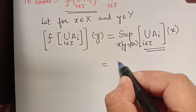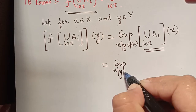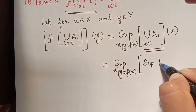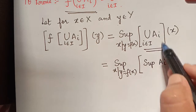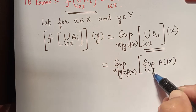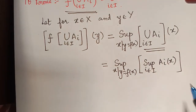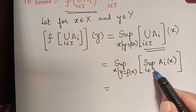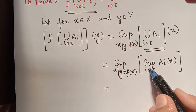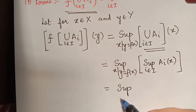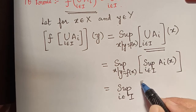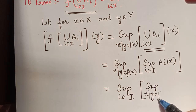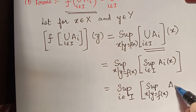This is equal to supremum over x such that y equals f of x, of supremum of Ai of x for i an element of capital I. This is by the property of fuzzy union. Since both are suprema, we can interchange the brackets, and this can be written as supremum of i an element of capital I of supremum over x such that y equals f of x of Ai of x.